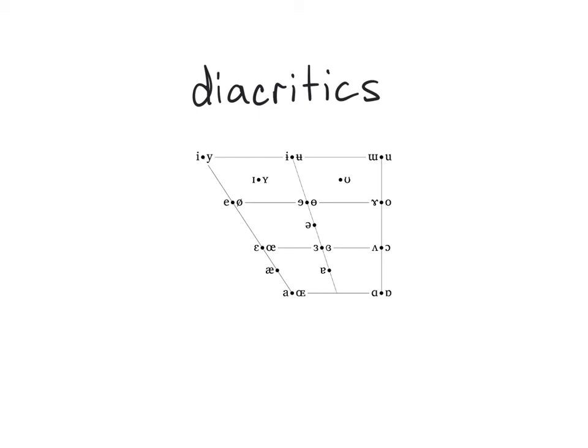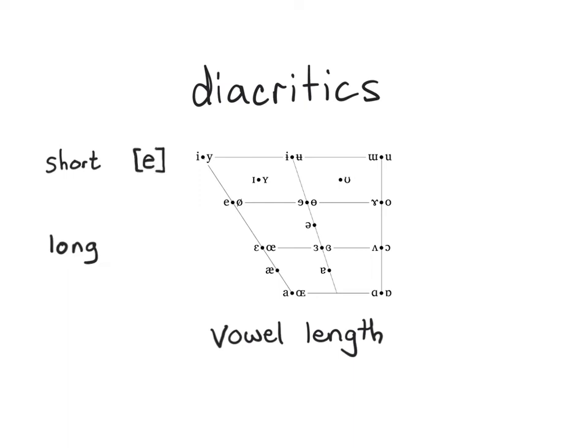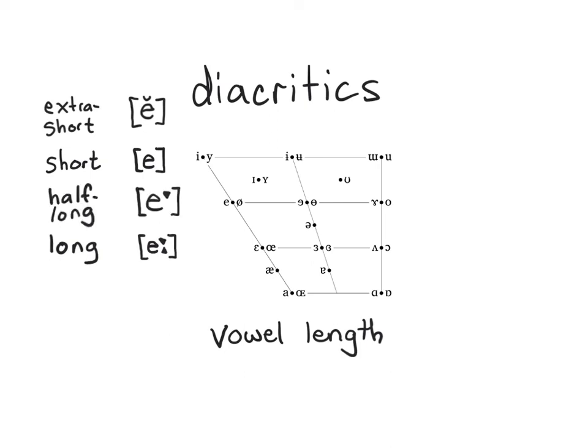The IPA also has a set of three diacritics that can indicate differences in vowel length. For languages in which differences in vowel length are linguistically significant, we normally only need to represent short versus long vowels, with short vowels being left unmarked and long vowels having a pointy colon after them. However, if a third or fourth level of distinction in vowel length is needed, we can represent an extra short vowel with a breve diacritic over the base symbol, and we can represent a vowel length between short and long — half long — with the top half of the pointy colon.